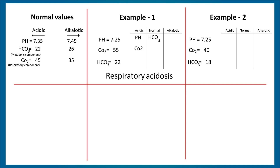Example two: pH is 7.25, CO2 is 40, and HCO3 is 18. pH is in the acidic range, CO2 is normal, and HCO3 is in the acidic range. Since the pH is acidic and the metabolic component HCO3 is also acidic, this is metabolic acidosis.